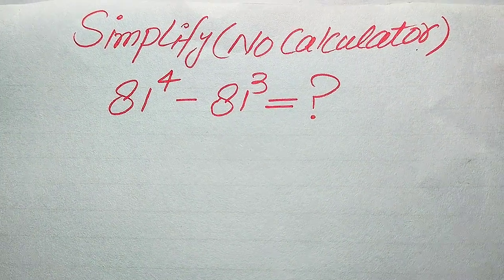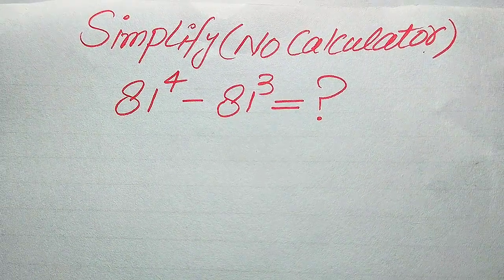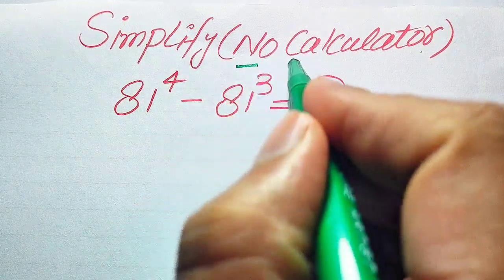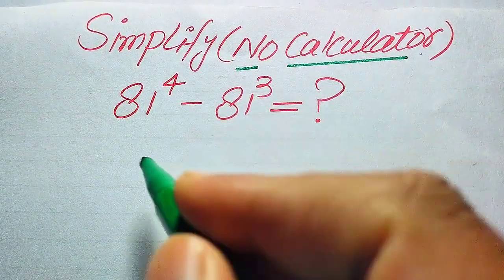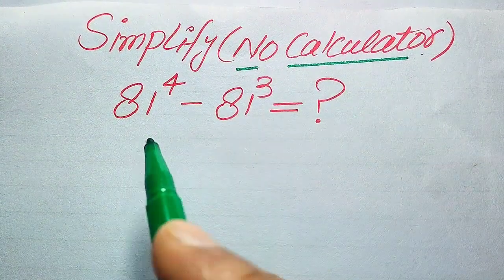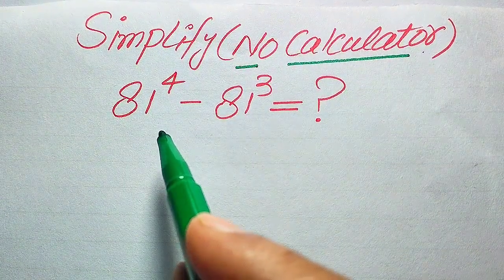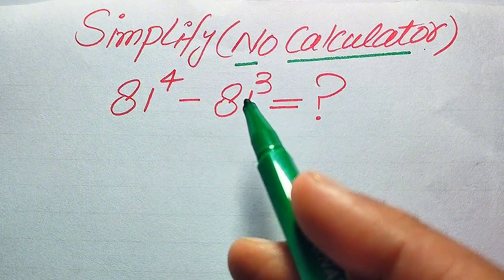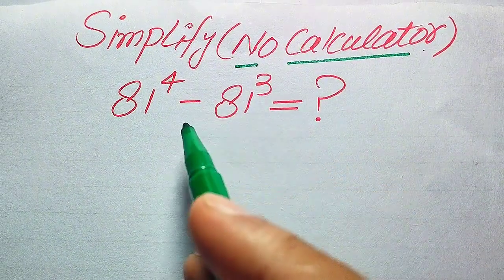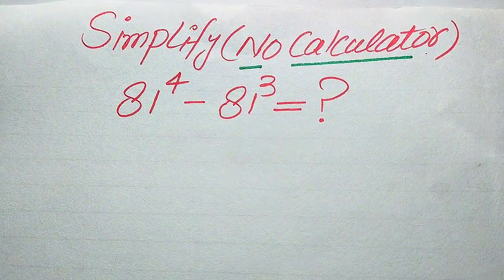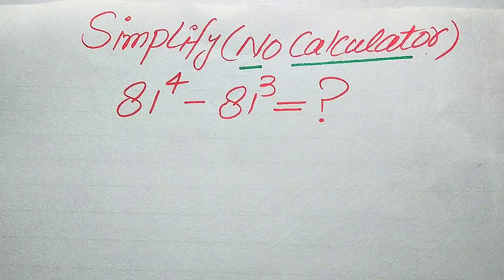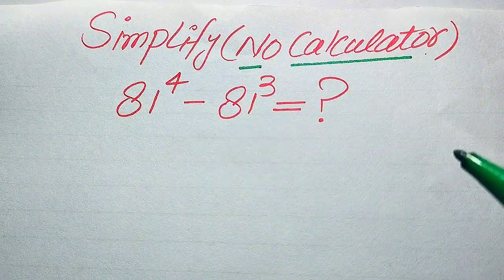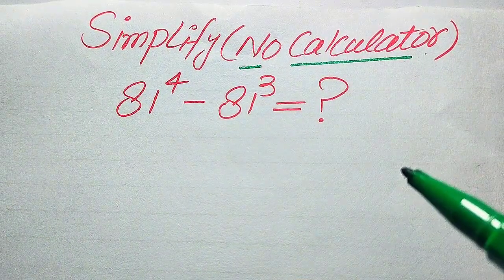Hello everyone. How to simplify this nice algebraic expression without using the calculator. If we have 81 to the power of 4 minus 81 to the power of 3, what does it equal? We need to write this algebraic expression in simplified form without using the calculator.